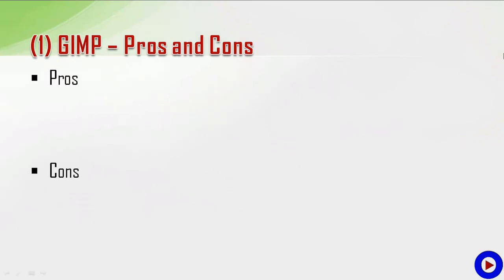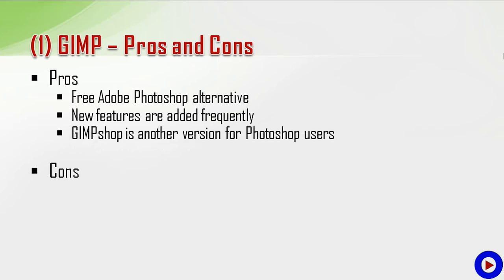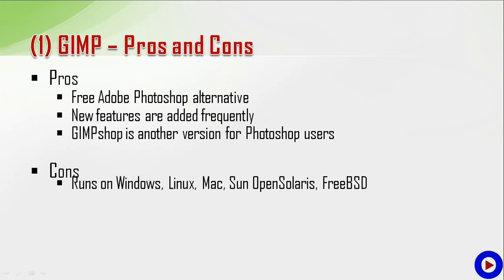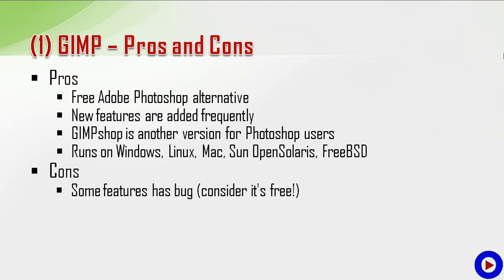Let's talk about pros and cons. Pros: it is considered a free Adobe Photoshop alternative, and new features are added frequently. GIMP Shop is another version for Photoshop users, providing a similar interface. It is multi-platform software, so it runs on Windows, Linux, Mac, Sun OpenSolaris, and FreeBSD. Cons: some features have bugs; it is a bit complicated for new users and has fewer learning materials.